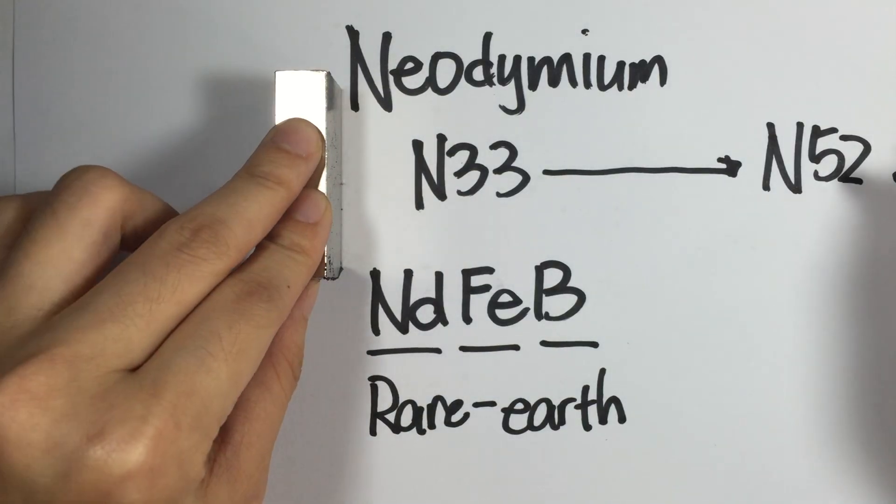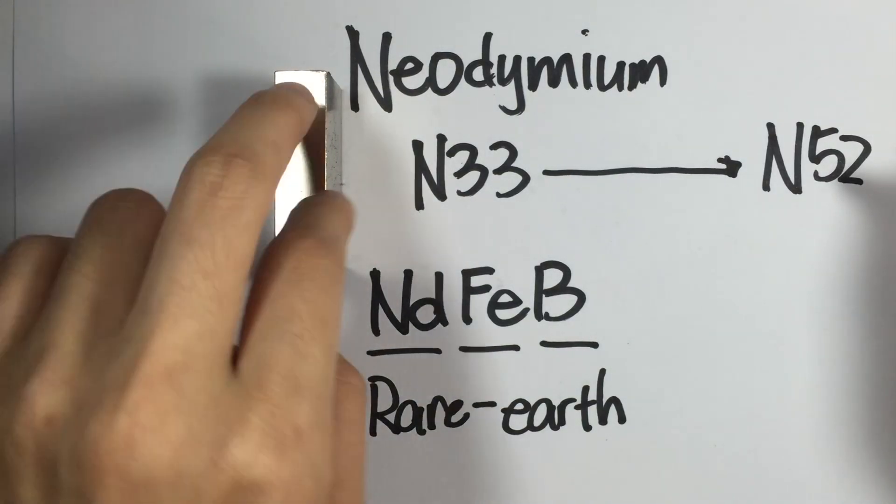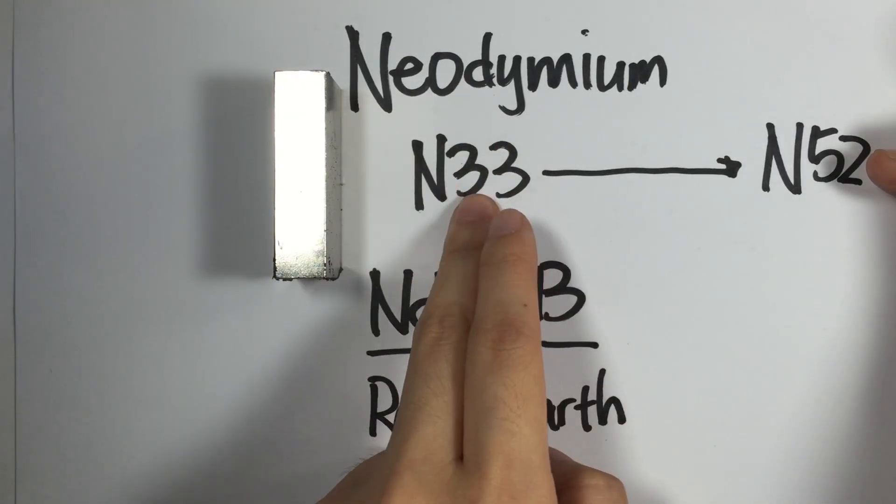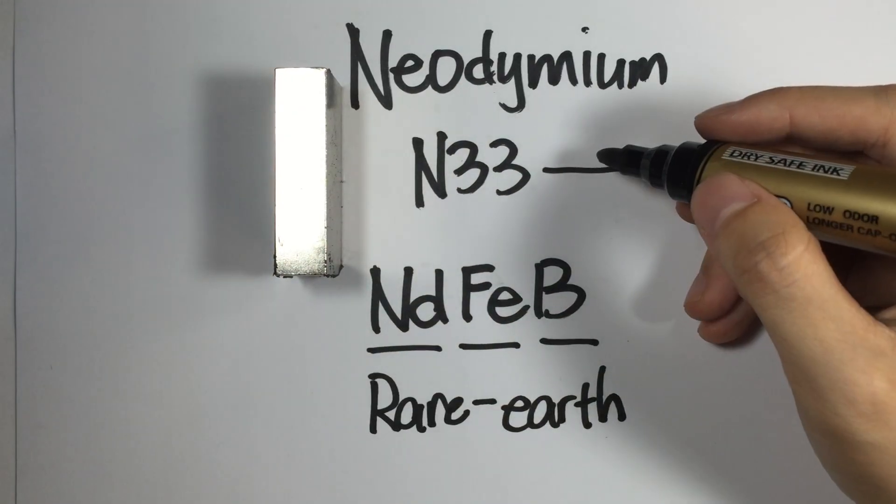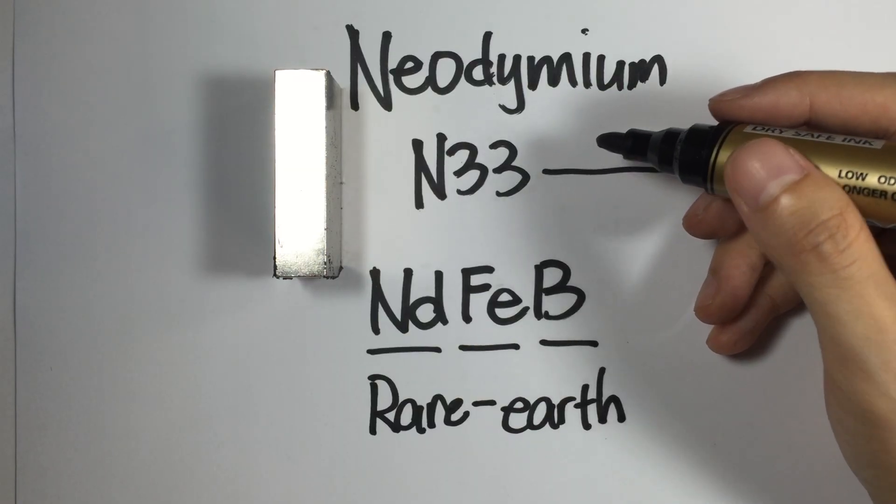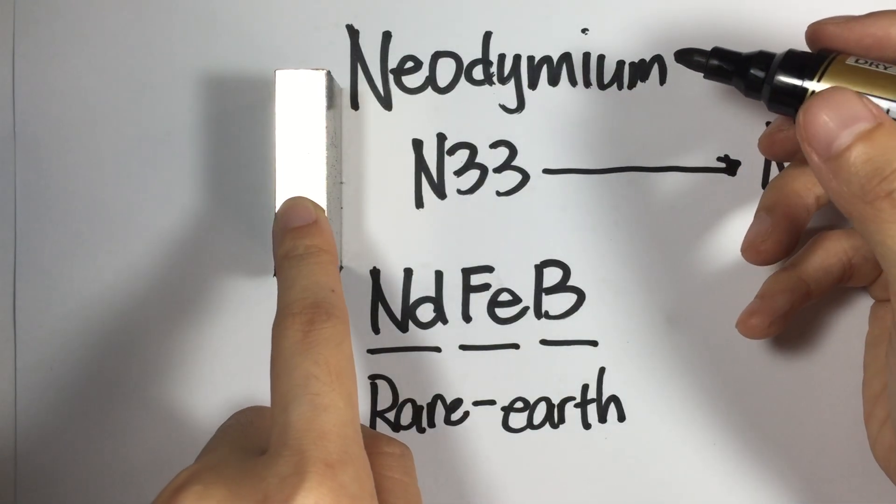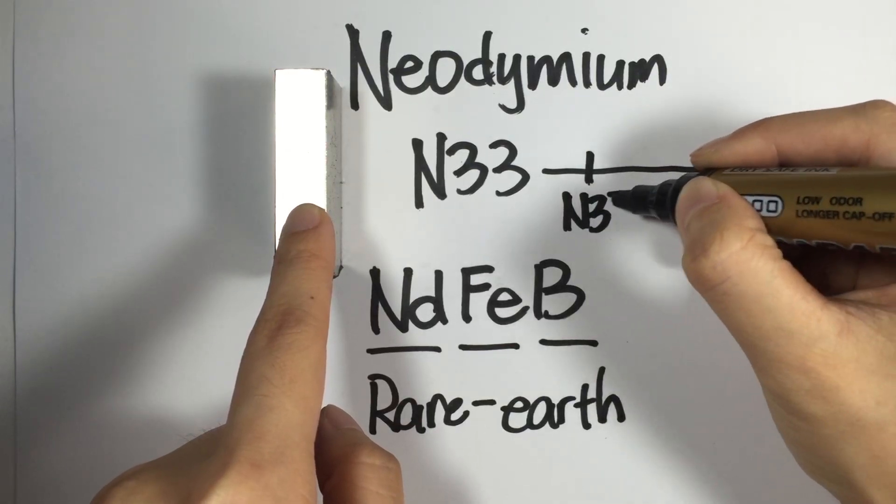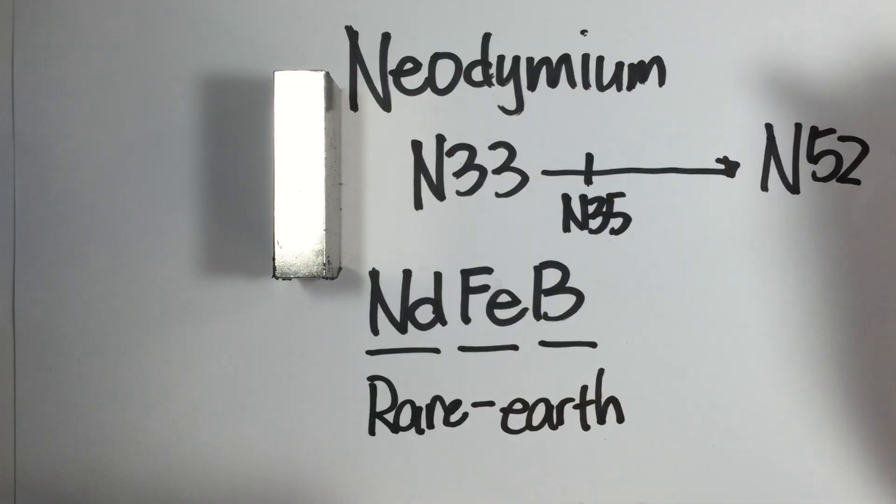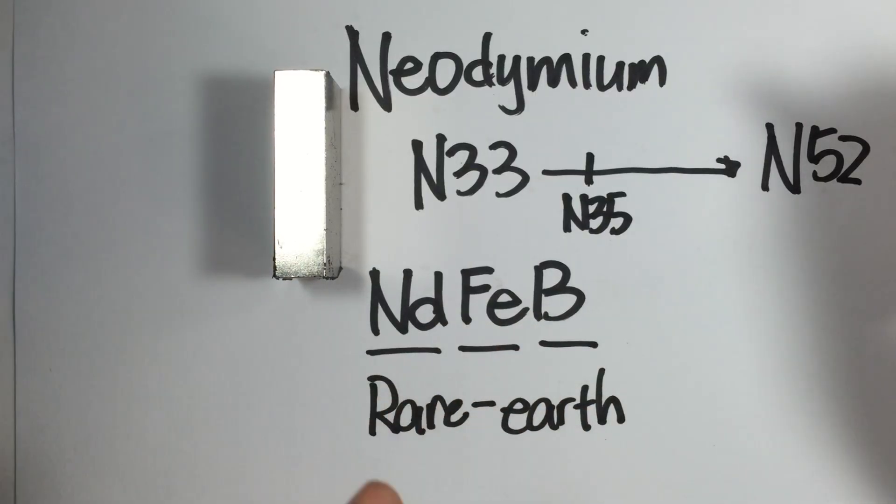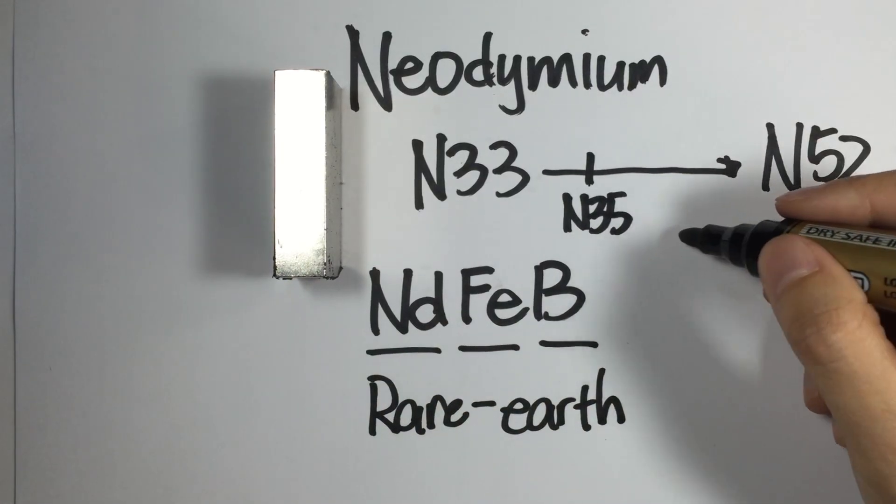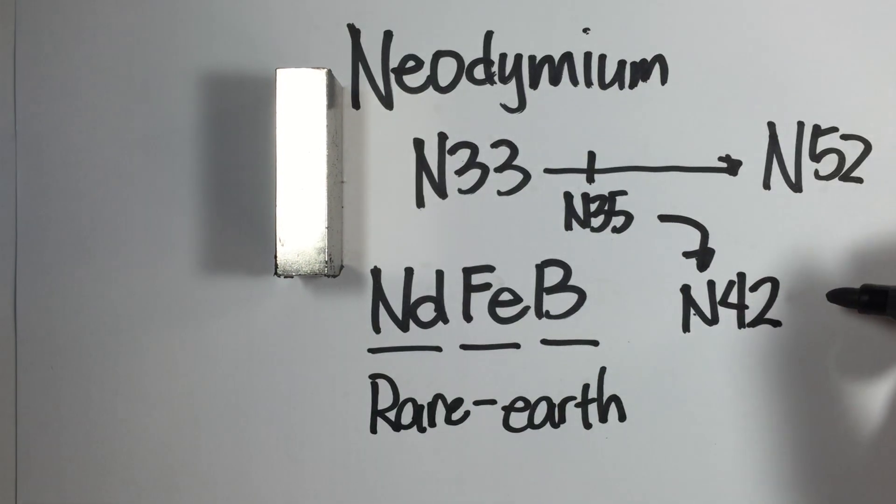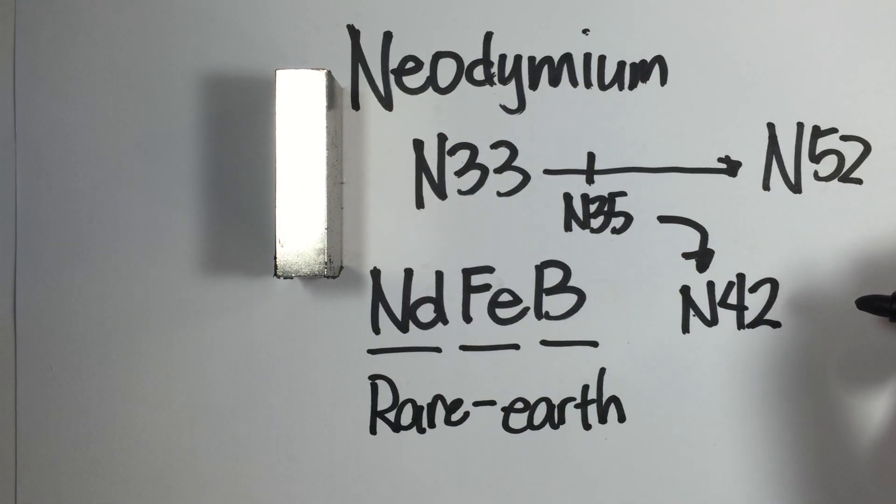So for this specific size, you can have different strengths. This is the strength level. By default, if you buy a neodymium magnet and it doesn't tell you what grade it is, it's usually N35. But we're working on having every single magnet upgraded to N42. So our magnets are above average in terms of strength.